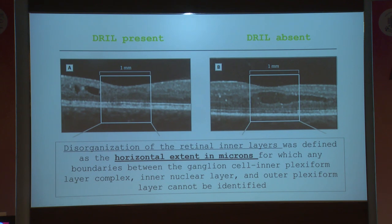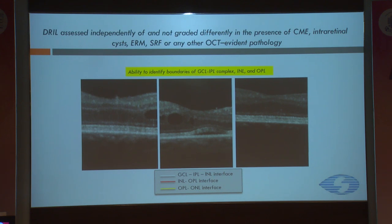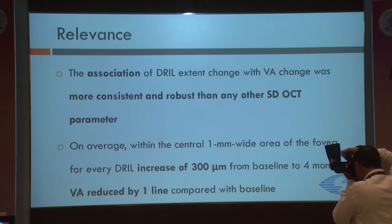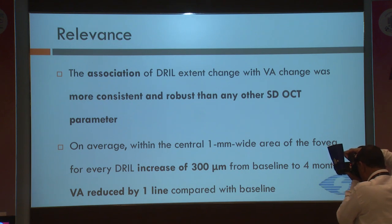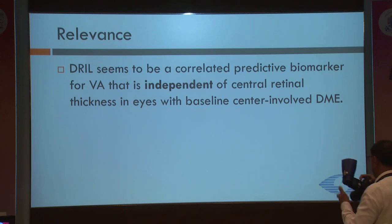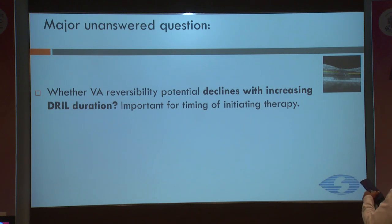The horizontal extent in microns is what we have to calculate. DRILL is assessed independently and not graded differently in the presence of CME, intraretinal cysts, ERM, SRF, or any other OCT-evident pathology — it is totally independent of these. The association of DRILL extent with vision was more consistent and robust than any other SD-OCT biomarker. In the central 1mm area, a DRILL increase of 300 microns from baseline correlates with reduced vision by one line compared to baseline. DRILL seems to be a correlative predictor biomarker that is independent of central retinal thickness in eyes with central-involving DME. An unanswered question is whether visual acuity potential declines with increasing DRILL location.